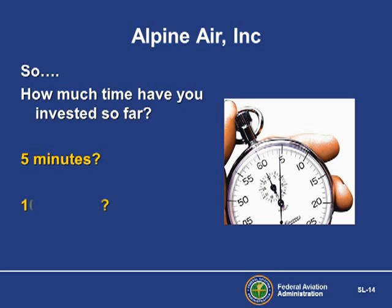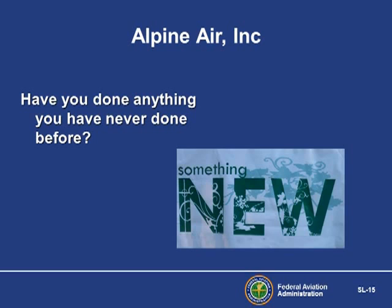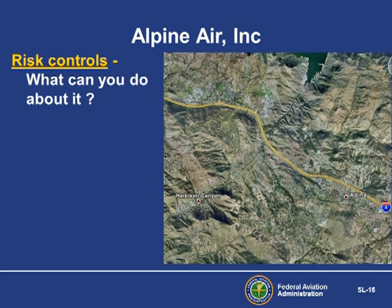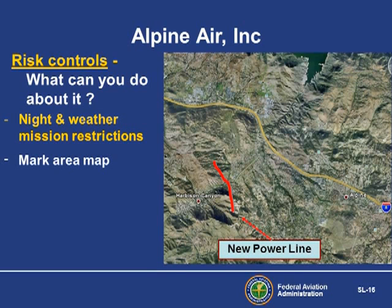How much time have you invested so far in this SRM process? Five minutes? Ten minutes? Have you done anything you've never done before? Now that you have assessed your risk and found it unacceptable, what can you do to mitigate that risk? The most obvious is putting mission restrictions on flights in or near Harbison Canyon, especially during times of low visibility.